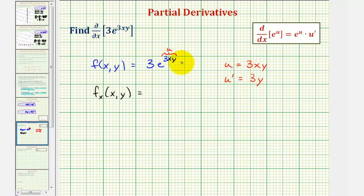So now if we want, we could think of this as just three e to the u. And therefore our partial derivative with respect to x would be three times e to the u or three times e to the power of three xy times u prime, which is three y.